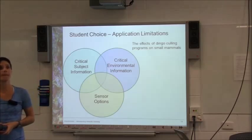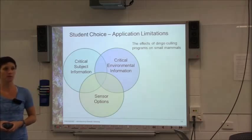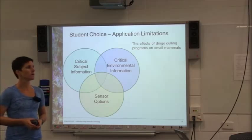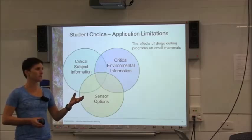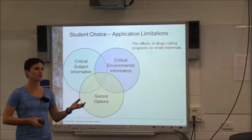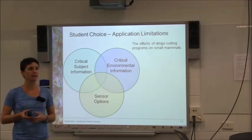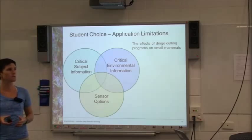Camera traps — that's remote sensing. We might also consider helicopter surveys, and someone brought up unmanned flight as well, which could be options.